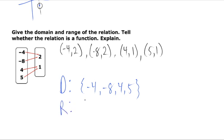Looking at this mapping diagram, each input goes to a single output. It's okay that two of these inputs went to the same output — that still makes sense. Think about vending machines: there can still be multiple buttons that give you the exact same thing, like 4 or 5 buttons that all give you water, or 2 or 3 buttons for a Coke. It still makes sense to have separate inputs going to the same location. This is a function.